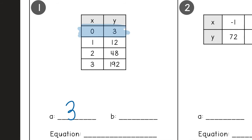So A equals 3. Now to find our B value — remember B represents whether it's going to be growth or decay. Let's take a look at our y values only: 3, 12, 48, 192. Notice how they're getting bigger. So I know for sure that this table represents exponential growth because it's getting bigger. So at least my hint is that B has to be bigger than 1.